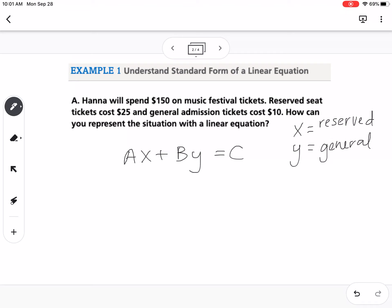We know that we're going to spend $25 times the amount of reserved seats plus $10 times the amount of general seats. And we know together that's going to cost $150. So this right here will be our equation written in Standard Form.